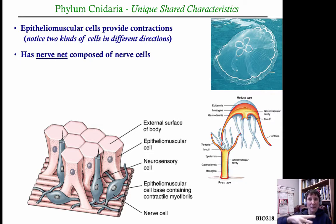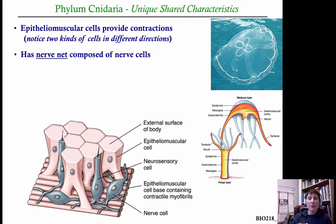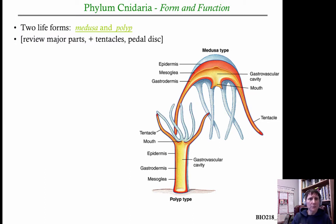The nerve cells power the epithelial muscular cells, causing them to contract. In jellyfish, this gives that classic pumping movement as they travel through the water. It's almost like a stimulus — an electrical current — that causes the muscles to contract. They only have muscles going in a couple of directions, so the movements they can make are very limited. They can basically contract to pump water out of the bell and propel themselves forward, but most cnidarians really don't have much ability to direct where they're going.